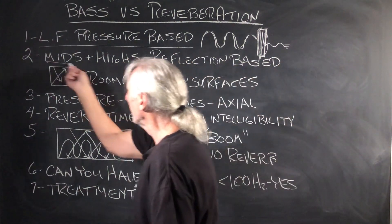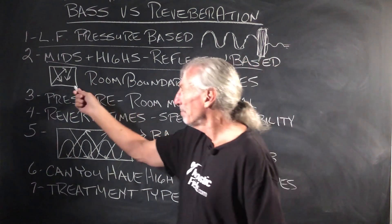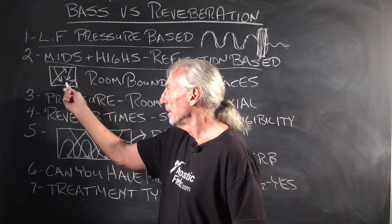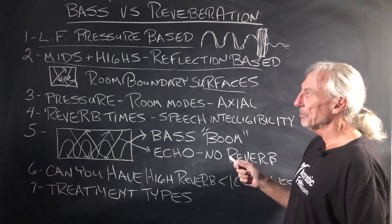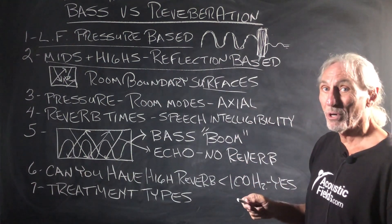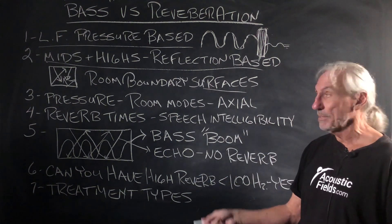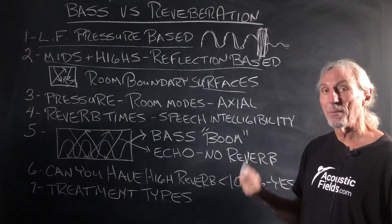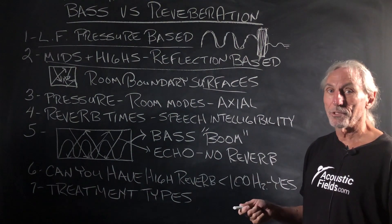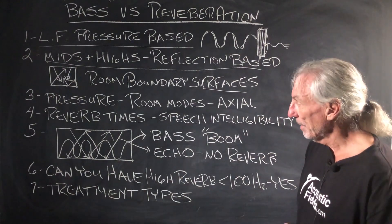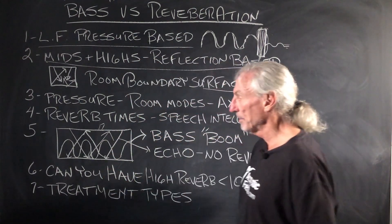Mids and highs are reflection-based — those are the things bouncing off all the walls in our rooms. That's the issue that people sometimes call echo, but it's not. Echo is a repeating sequence, usually over a distance. Reverberation is a summation process — a summation of all the reflections off the wall surfaces. Each wall surface contributes about 17% to the whole problem.